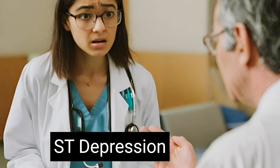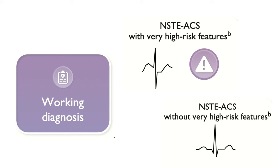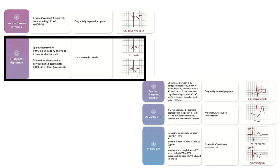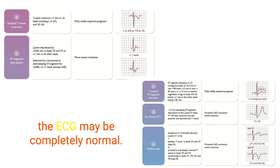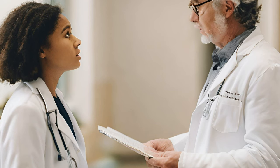If there is no ST segment elevation or equivalents, the working diagnosis in the presence of acute chest pain is non-ST elevation ACS. Patients who have a rise and fall of cardiac troponin will fulfill MI criteria and receive a final diagnosis of NSTEMI. Those without troponin elevation will receive a final diagnosis of unstable angina. ECG changes may include ST depression, transient ST elevation, T wave abnormalities such as hyperacute T waves, T wave inversion, biphasic T waves, pseudonormalization of T waves, or prominent negative T waves — or the ECG may be completely normal.